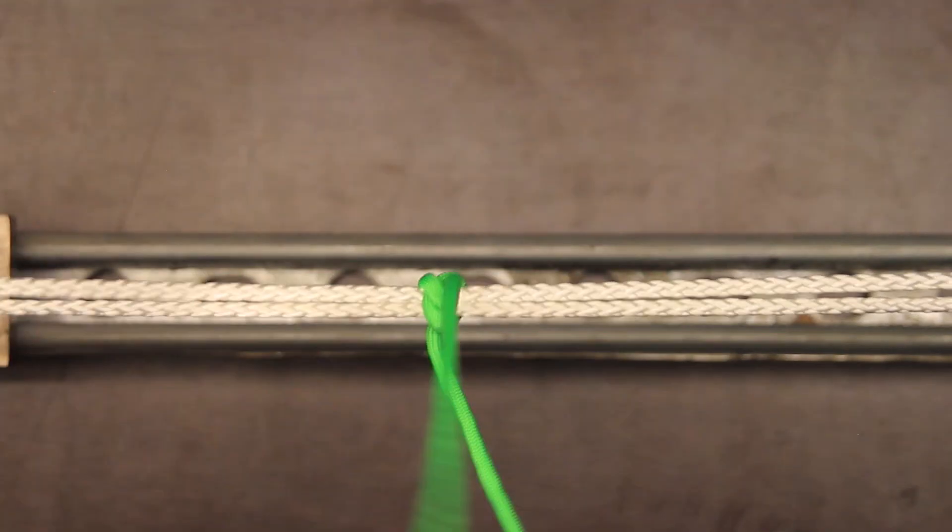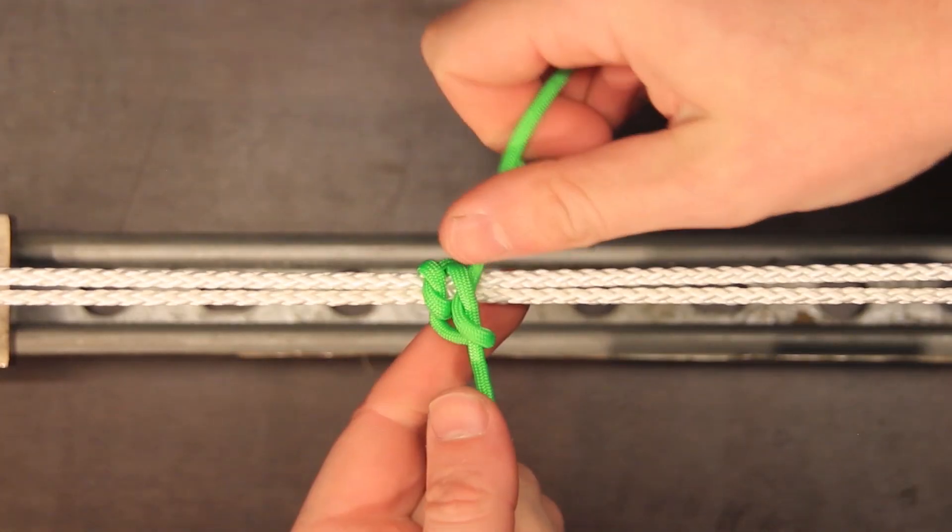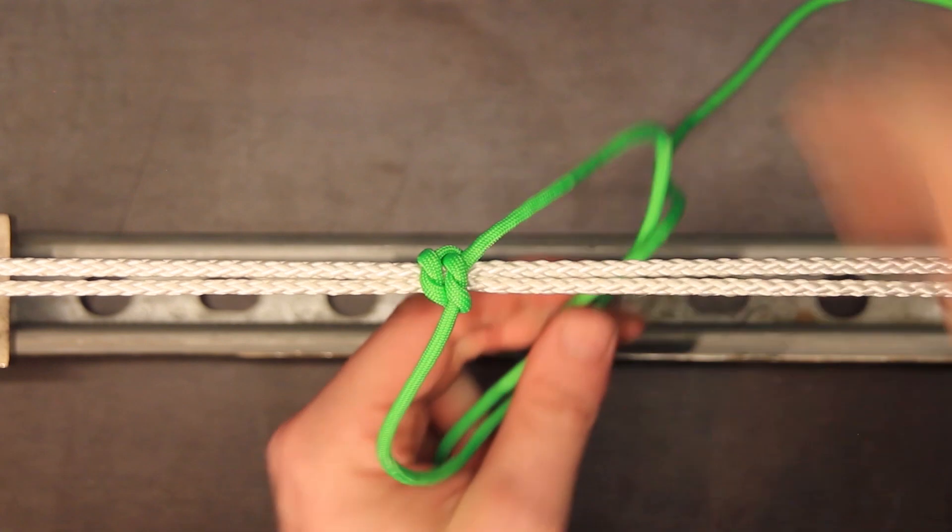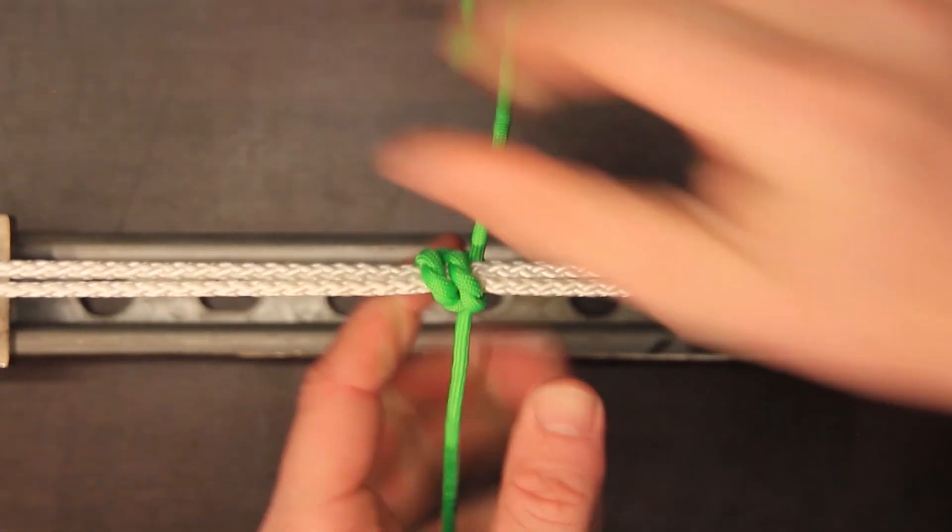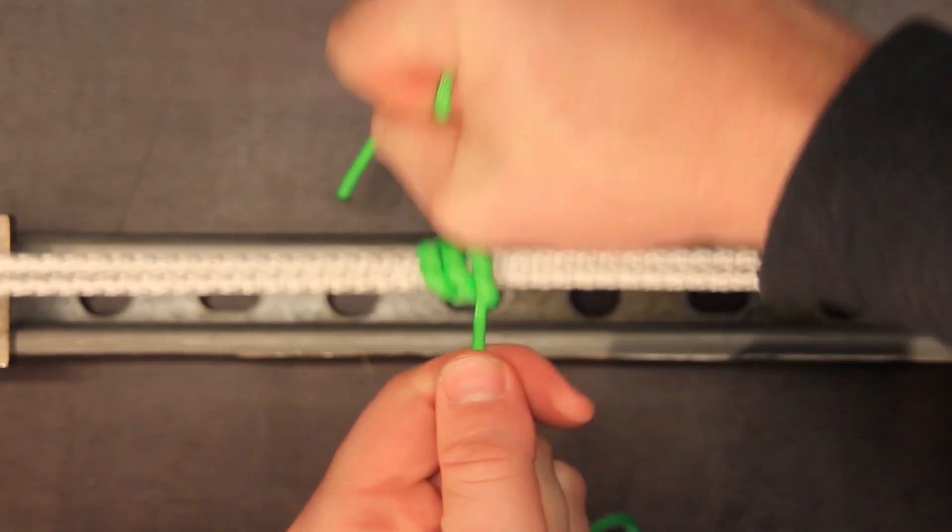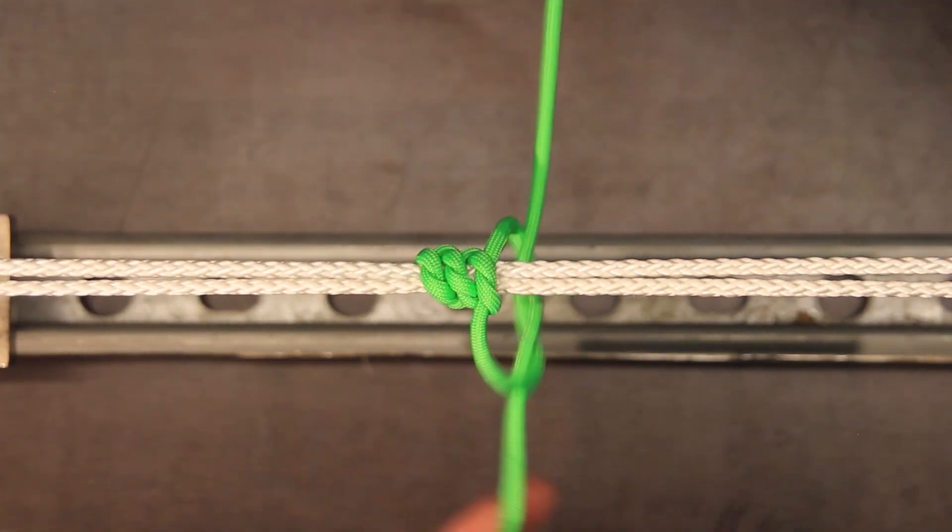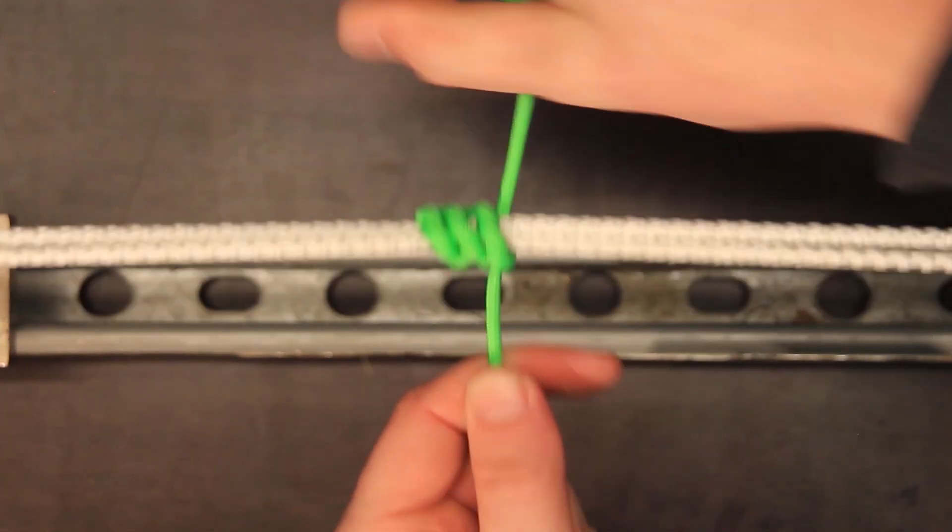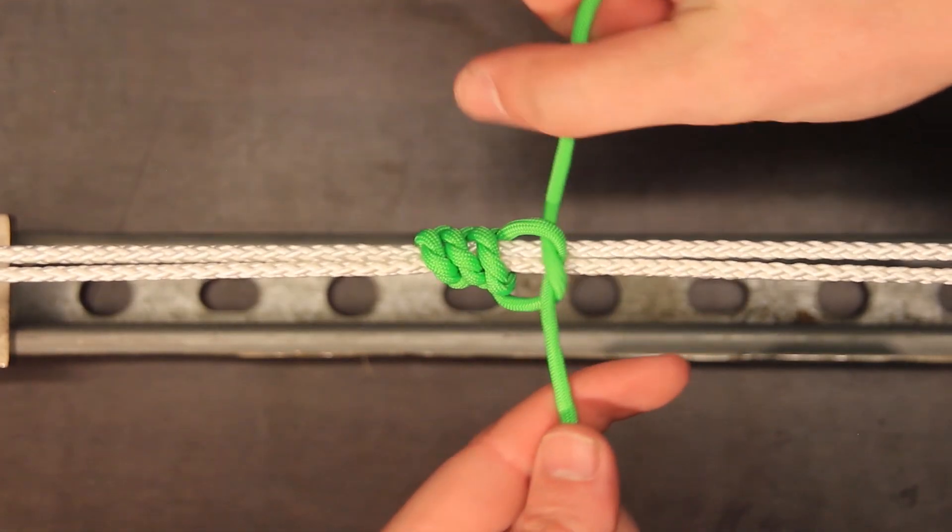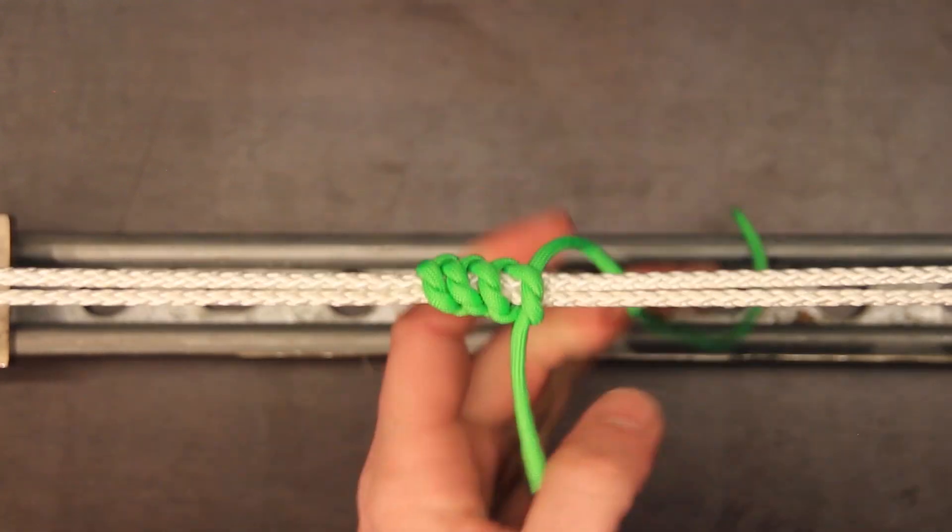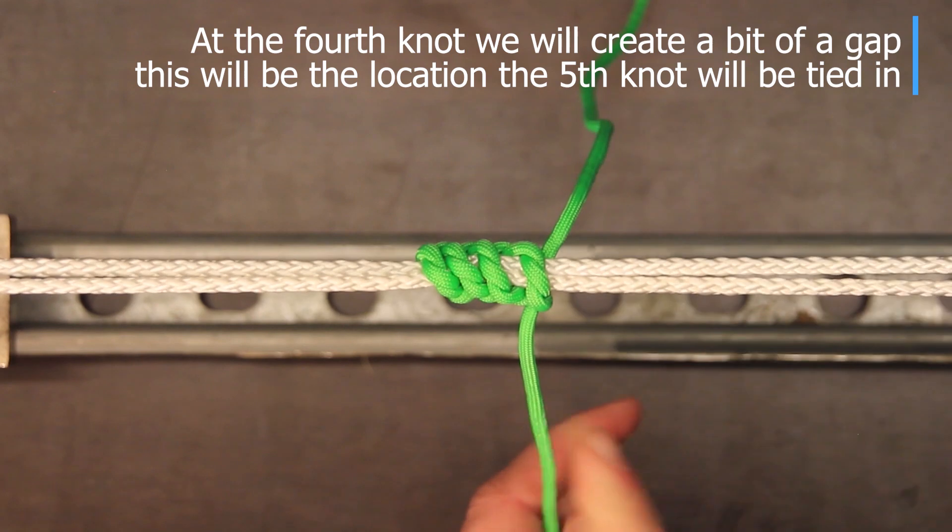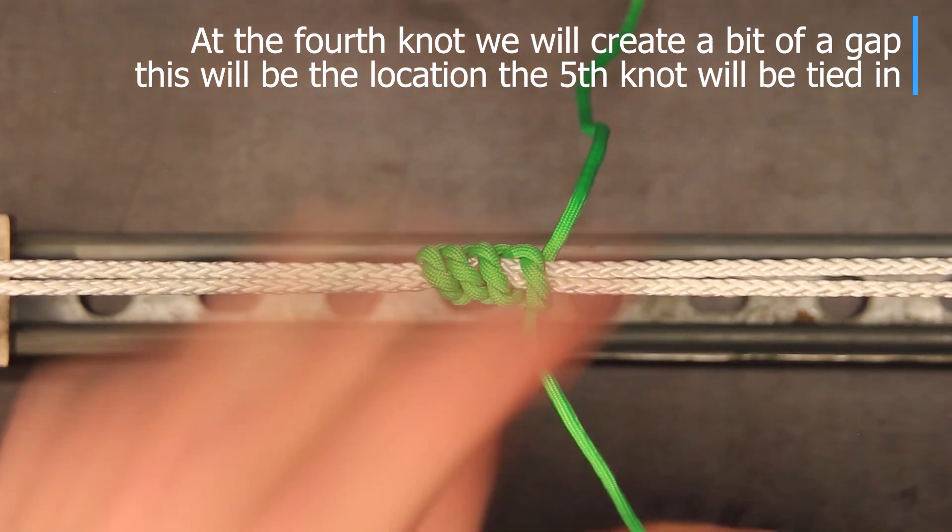And then you pull it tight make a similar knot on the bottom and do repeat these steps for another four times. I always make my knocking points about five knots on the bottom and three on the top and when I get to the fourth knot I make sure there's a little gap and that gap is in place so I can put the final knot in between the third and the fourth knot.